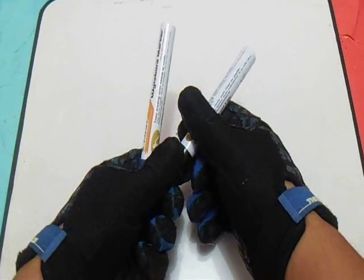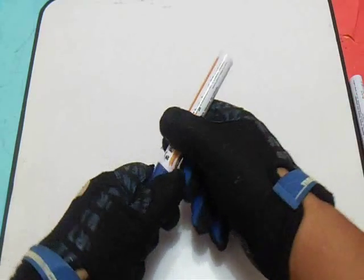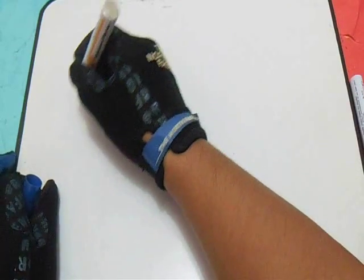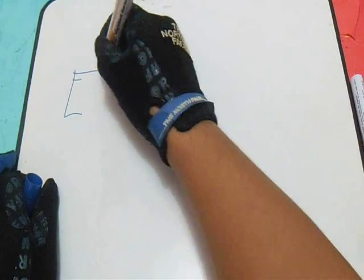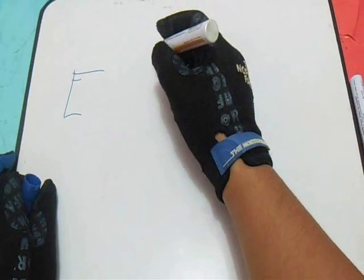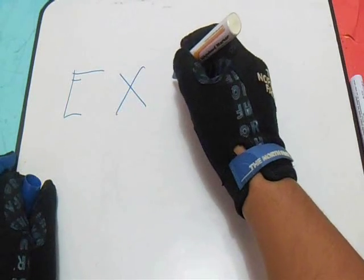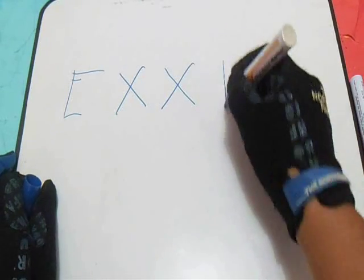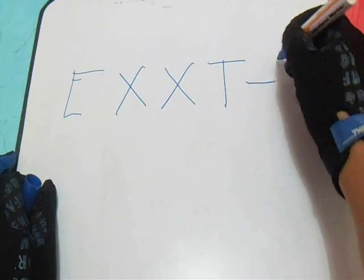The FCAW identification system is structured as follows: we have E, X, X, T, and X.